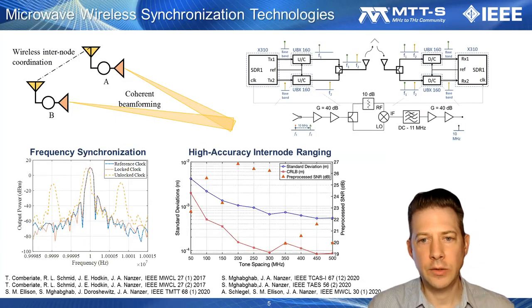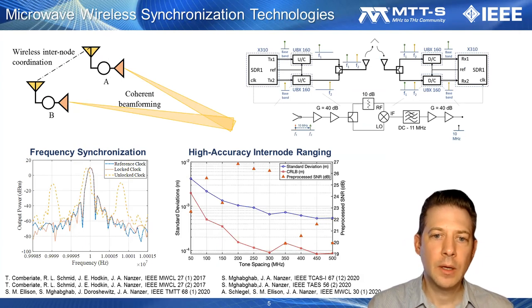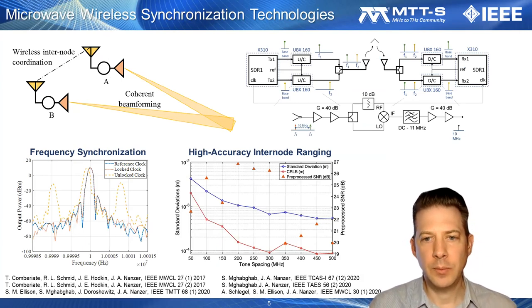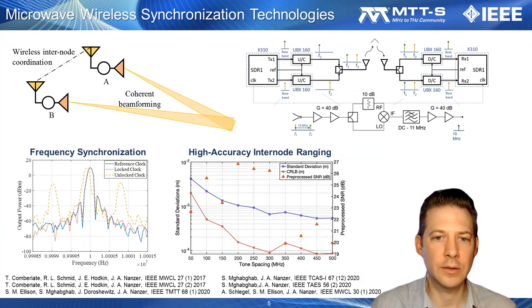Achieving the necessary coordination requirements can be challenging. Supporting accurate phase alignment for beam steering necessitates highly accurate estimation of the relative positions of the nodes in the array, down to a fraction of the wavelength. I'll discuss recent advances in microwave technologies that my group has developed to address these fundamental coordination challenges.